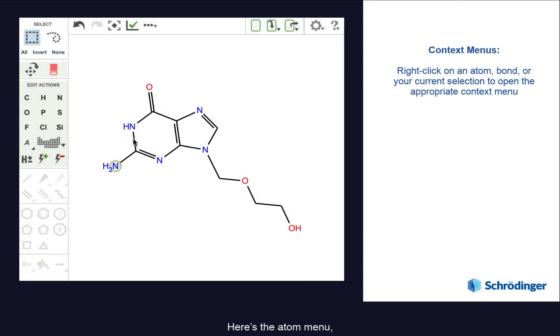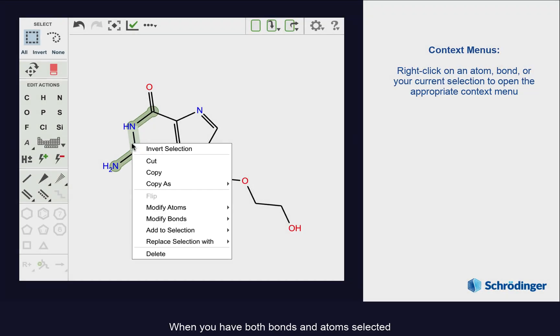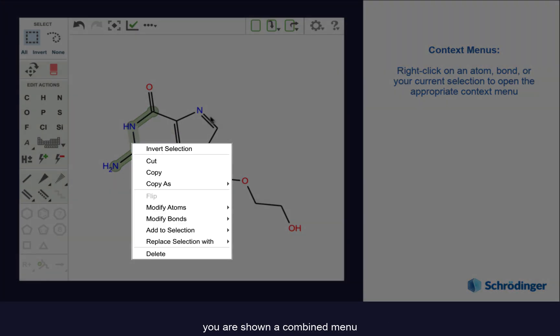Here is the atom menu, and here is the bond menu. When you have both bonds and atoms selected, you are shown a combined menu.